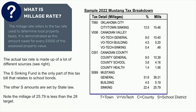Our goal here is for every taxpayer that lives in the school district to understand what does this do to my taxes, and how is this going to impact me. The actual tax rate is made up of a lot of different sources. On the sample tax bill on the right, you can see that the town, vocational institution, county, and school all make up the total tax rate.